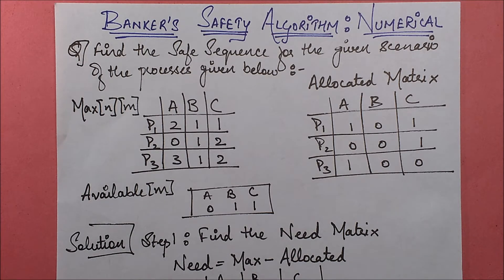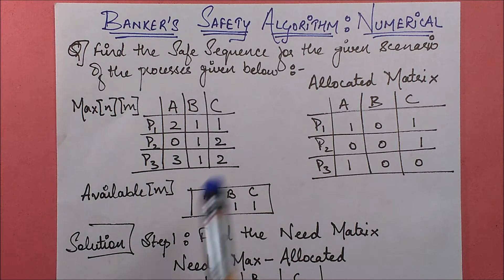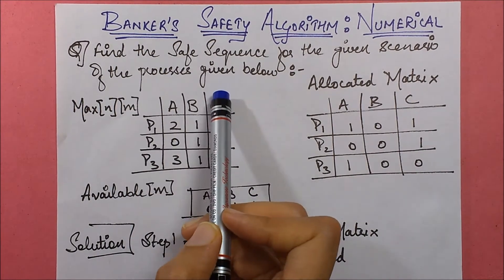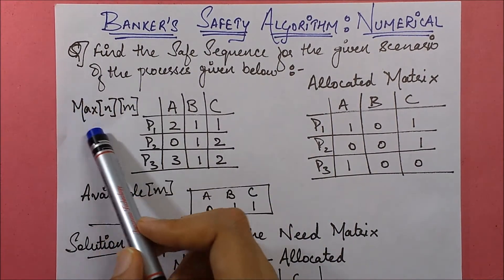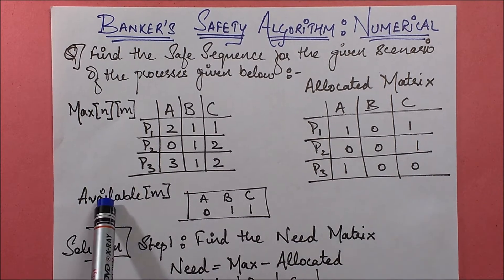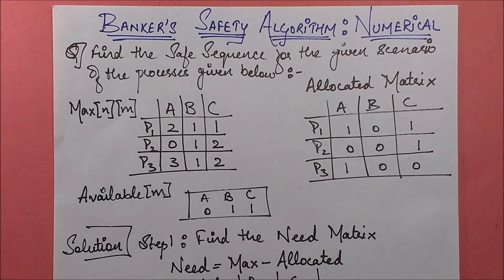Hello friends. In the previous session we discussed the Banker's Safety Algorithm. Now we are going to discuss a numerical based on the same algorithm. The problem says: find the safe sequence for the given scenario of the processes below, where the maximum need matrix, allocated matrix, and available resources are specified.